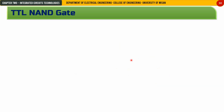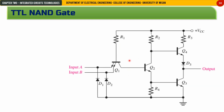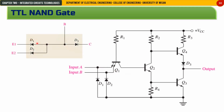Now let's look at the TTL NAND gate. The circuit is the same as the inverter, but Q1 here has two emitters — a multiple-emitter transistor. One emitter represents input A and one represents input B. These two emitters can be represented as two diodes D1 and D2, while D3 represents the diode at the collector.